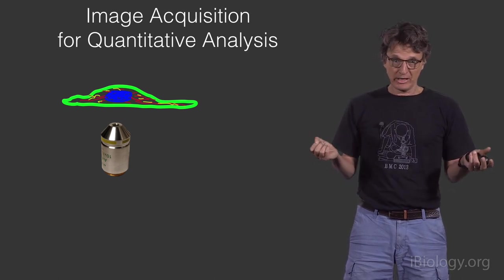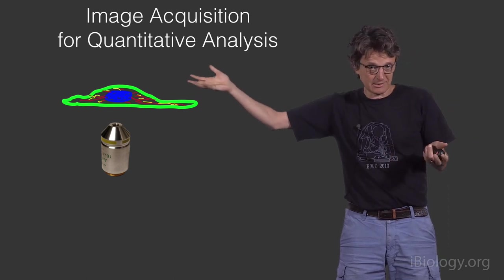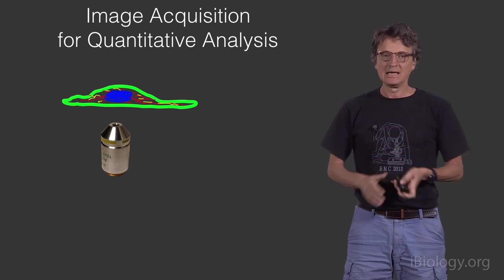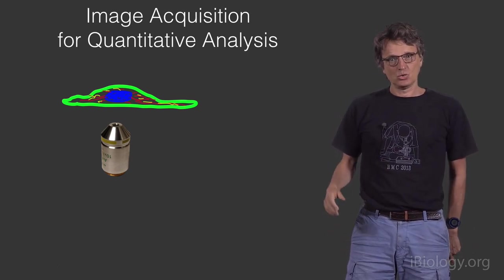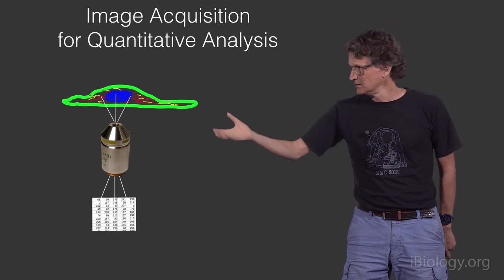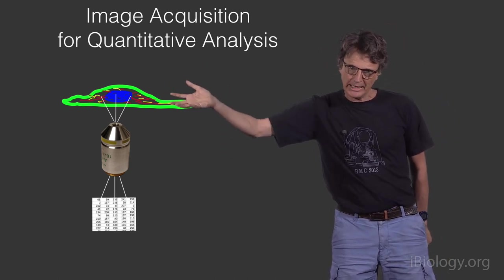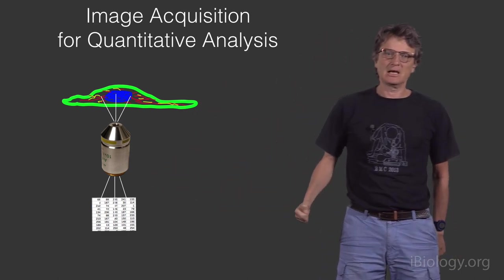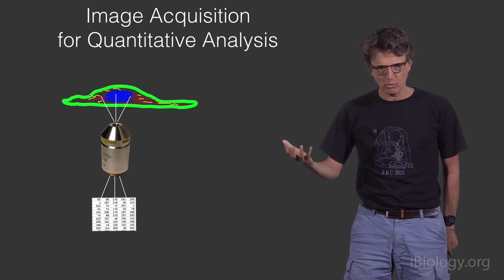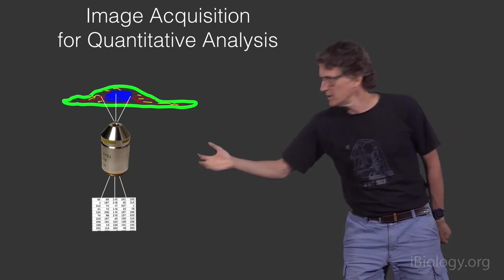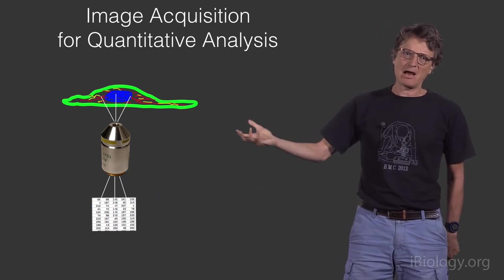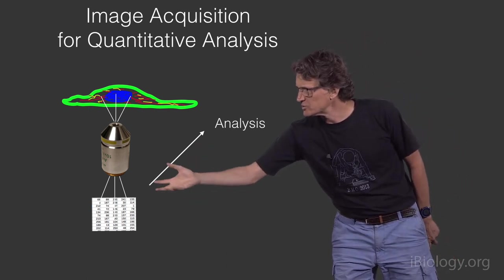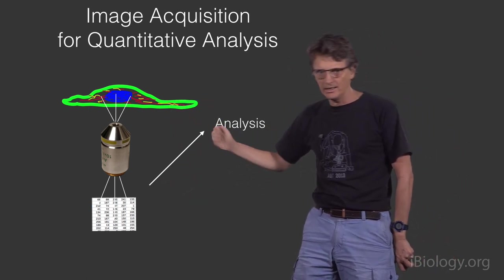We start with a microscope. We have an object, a cell, a magnifying device, an objective. In the end, the goal here is to acquire data, shine light or collect light that comes from the sample, and collect numbers. What I want you to get away with is that we are going to care much more about those numbers than how good the picture looks.